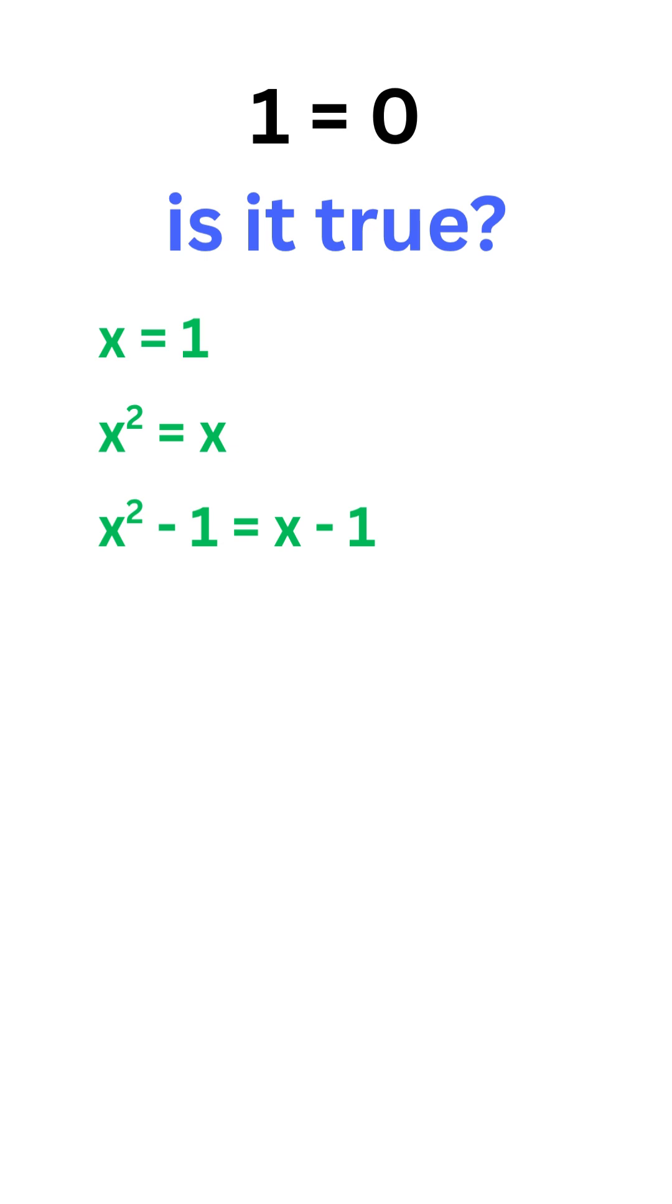Fair enough. We know in algebra a square minus b square equals a plus b times a minus b. Let's apply that here on x square minus 1. We get x plus 1 times x minus 1 equals x minus 1.